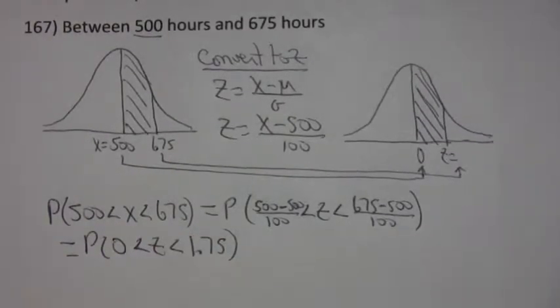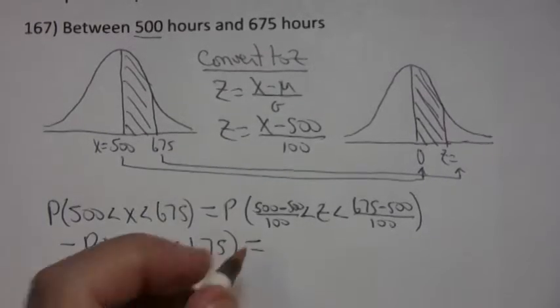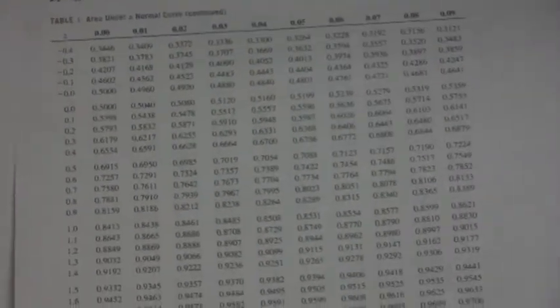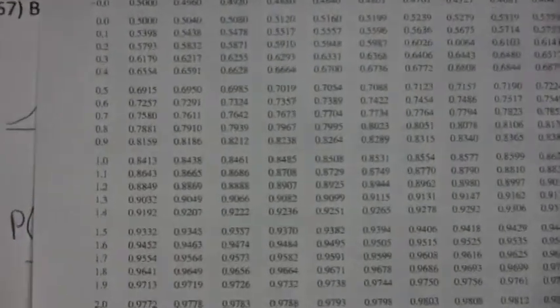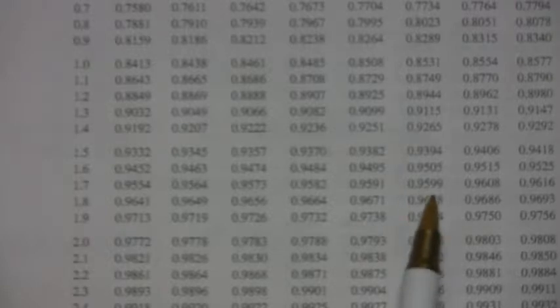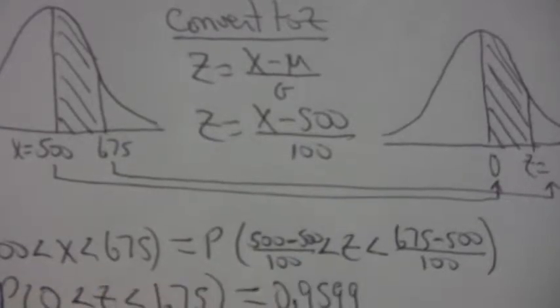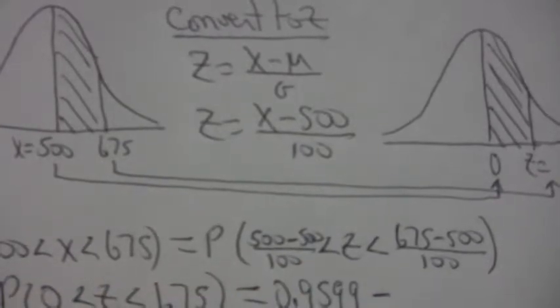And remember, when you're doing probabilities for between, you look up the big number in the table, then you look up the small number and subtract. So when I look up 1.75 in the table, 1.7, 0, 1, 2, 3, 4, 5, there it is right there. That's 0.9599.